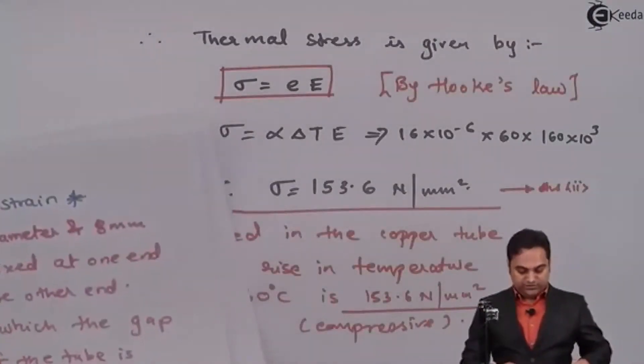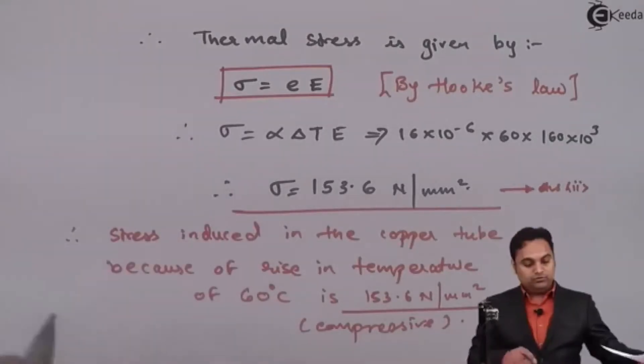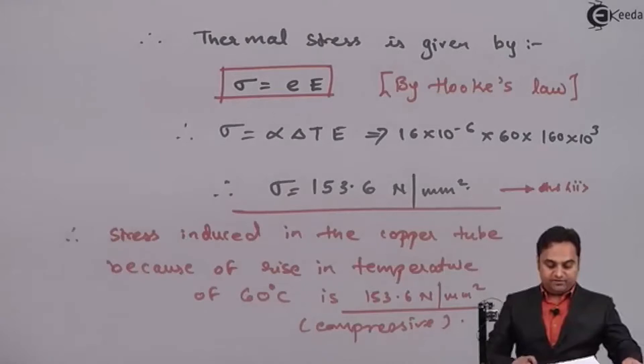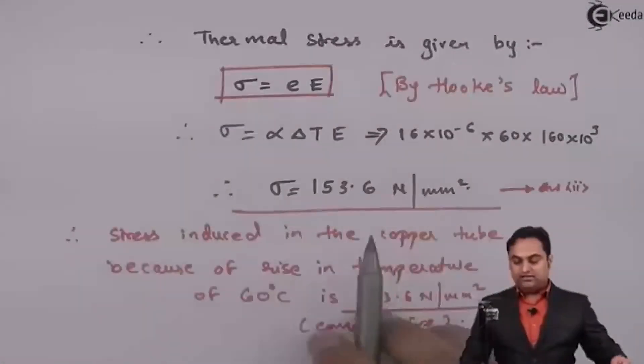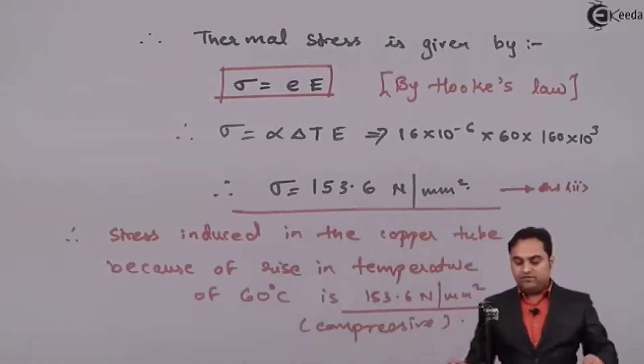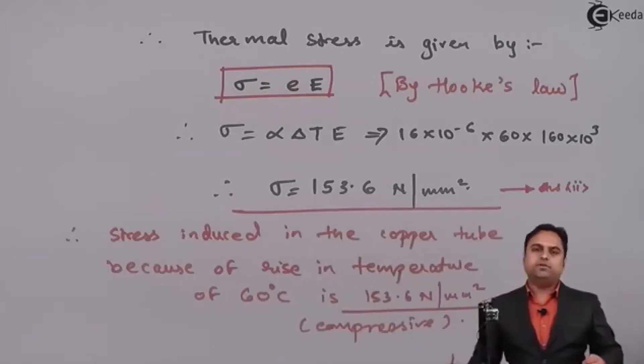So as we have seen in this problem there were two questions asked. We had to calculate the temperature at which the gap will close and the temperature we have found out was 62.5 degrees Celsius. And then for a temperature rise of 60 degrees Celsius we have to calculate thermal stress. The answer is 153.6 newton per mm square. With this we complete the question.